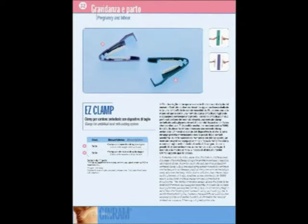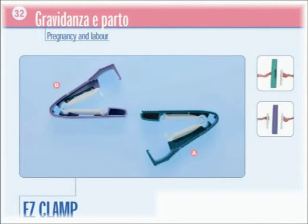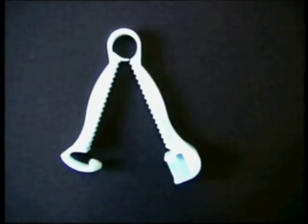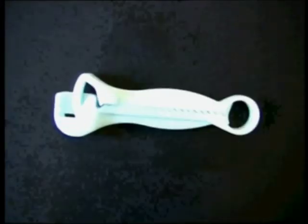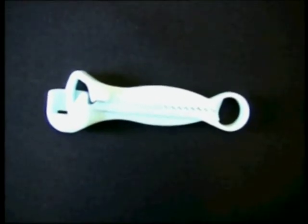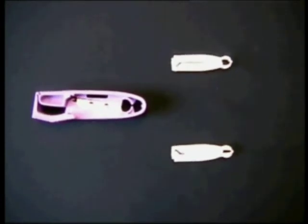Pages 32 and 33 show the accessories for pregnancy and labour. You can find the traditional umbilical cord clamp named RamClap and a new clamp with an incorporating cutting system called Ease Clamp.